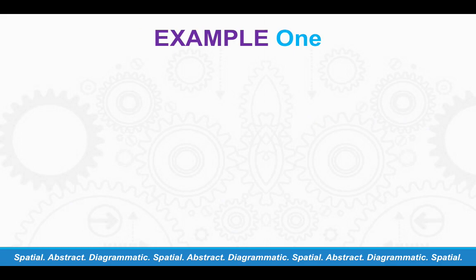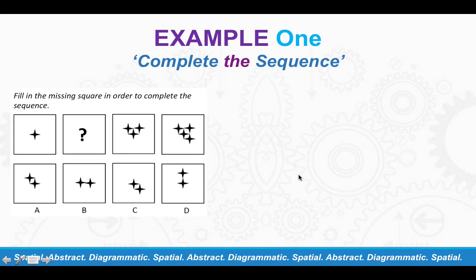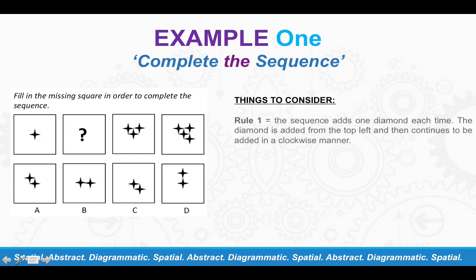So let's have a look at the first example. Here we have a question that relates to complete the sequence. And the question is, fill in the missing square in order to complete the sequence. So as you can see here, you're trying to work out what that box is going to be based on your four options.